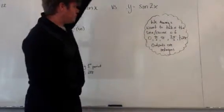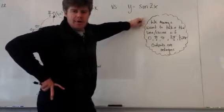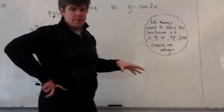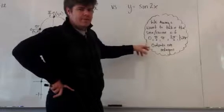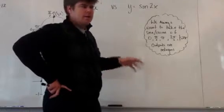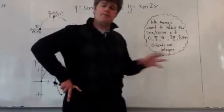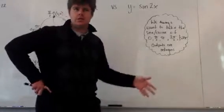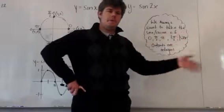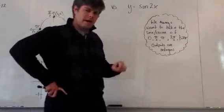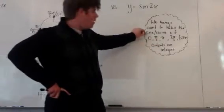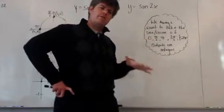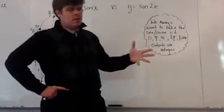The first thing to understand about these functions is that we always want to take the sine or cosine of 0, π/2, π, 3π/2, or 2π. The reason is that those values give us integers as outputs, which are nicer to plot than rational expressions. These are also actual critical values — they have major significance to the graph.